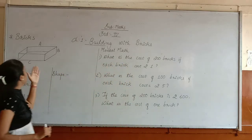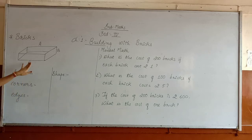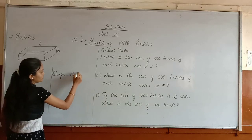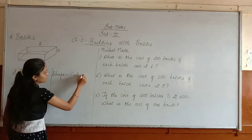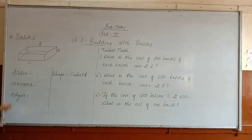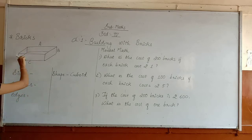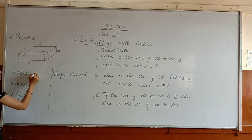Now we will see about bricks. Here we will see the shape of the brick. The whole shape of the brick is a cube. Let's see how many sides there are in this brick. There are 6 sides in this brick: top, bottom, and the sides.